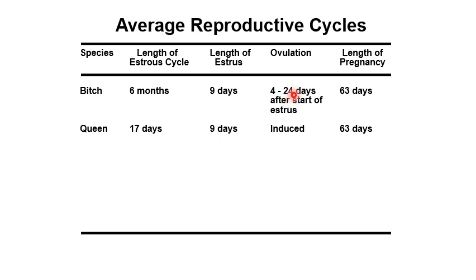The length of the estrous cycle will also vary according to the size of the dog. For large breeds such as golden retrievers, the estrous cycle is about 7 to 8 months, while smaller dogs have a shorter estrous cycle.